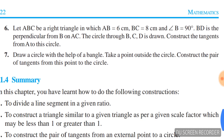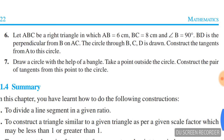Question number six: let ABC be a right angle triangle in which AB = 6 cm, BC = 8 cm, angle B = 90°. BD is the perpendicular from B on AC. The circle through B, C, D is drawn. Construct the tangents from A to the circle.